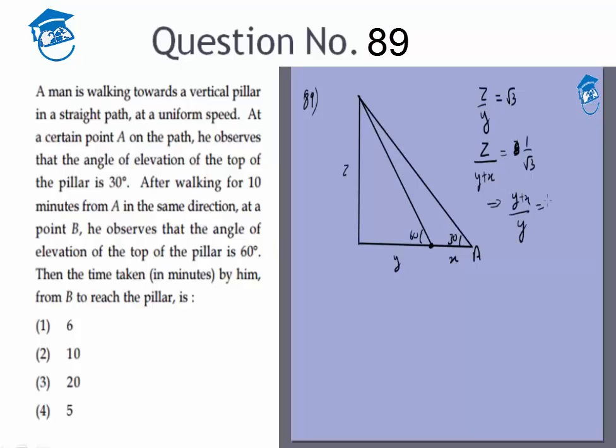Which means Y plus X is equal to 3Y, which gives me X is equal to 2Y, so X is equal to 2 times Y.